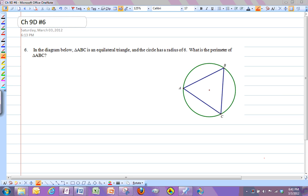Chapter 90, number 6. We've got a triangle, an equilateral triangle that's inscribed in a circle, and the circle has a radius of 6.